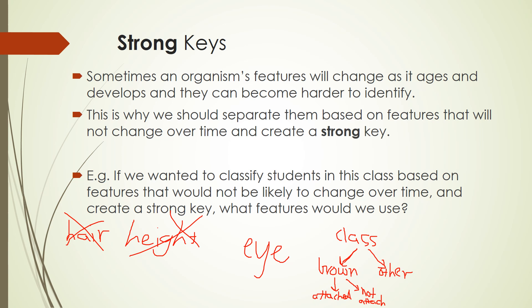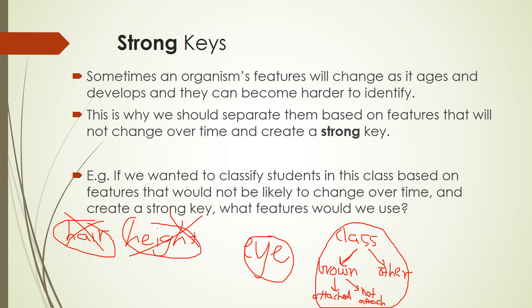Then I could group you even further based on characteristics that won't change over time. The main point to emphasise is that when we make a dichotomous key, we need to pick features that will not change. Bone structure, the number of legs, whether an animal has legs or flippers — these are stable features. We don't want to use height, weight, or hair colour and length because they will change over time.